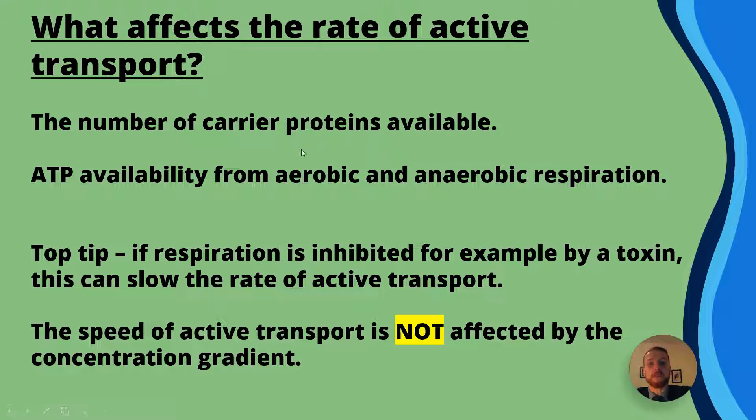Now that ATP is going to come from aerobic or anaerobic respiration. Now a top tip is that if respiration is inhibited for example by a toxin this can slow the rate of active transport and I've seen this in past paper questions in the past. It's important to know that if respiration is inhibited there won't be as much ATP so active transport may either be unable to occur or it may occur more slowly.